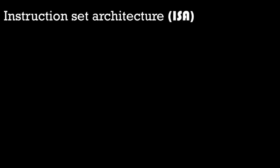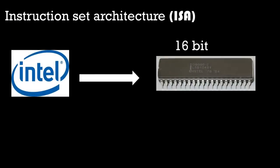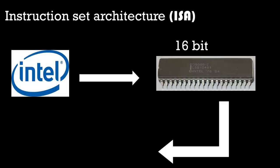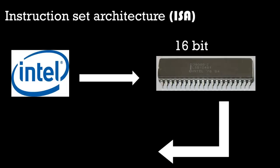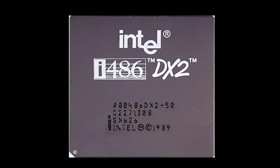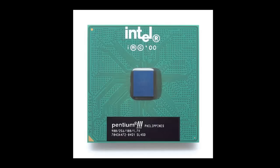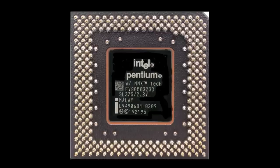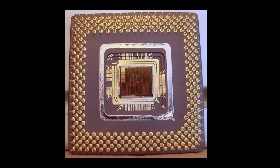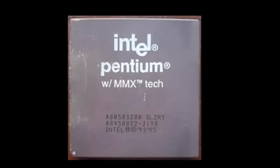x86 is a series of instruction set architectures developed by Intel, first used in 1978 for the Intel 8086 CPU — a 16-bit extension of Intel's 8-bit 8080 CPU. It provided full backwards compatibility for all of Intel's previous CPUs, which was good for software developers as their previous software would not become outdated, but bad for CPU architecture as it became messy with all the legacy support built into it.